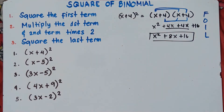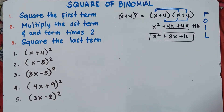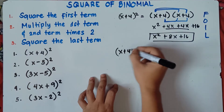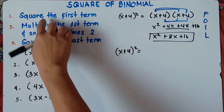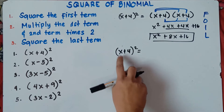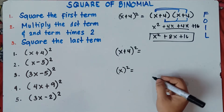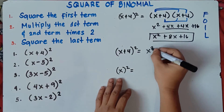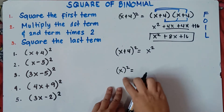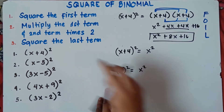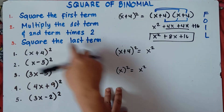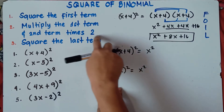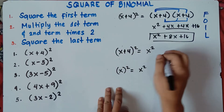Now let's do the square binomial method — you will be amazed because it is very easy. For x plus 4 quantity squared: first, square the first term, so that's x squared. Then second, multiply the first term and second term: x times 4 is 4x, times 2, that would be 8x.